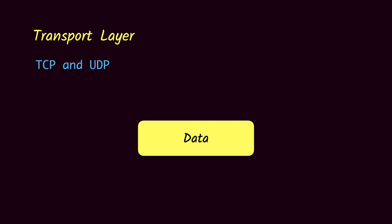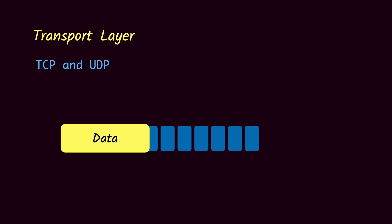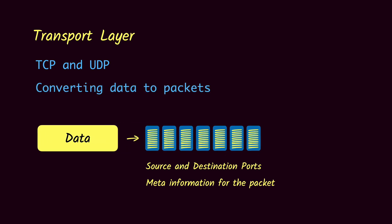The transport layer is responsible for getting the data from the application layer and breaking it down into smaller pieces called packets. It also attaches meta information to each packet, such as source and destination ports, which is used by the receiver's transport layer to combine the data back into a singular piece and give it to the application layer. These protocols dictate how packet transmission from client to server works.